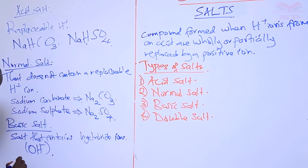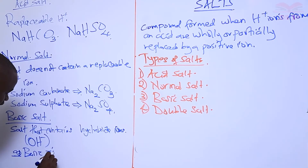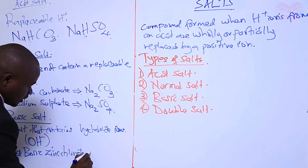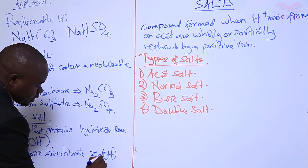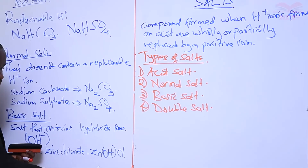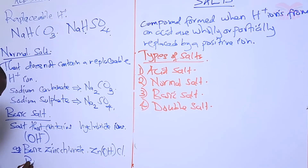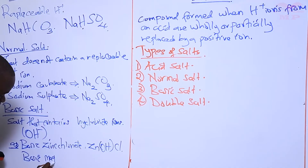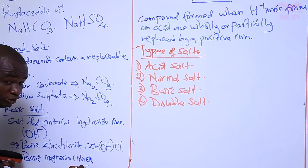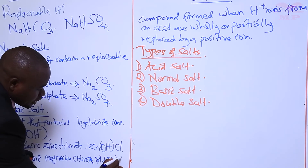For example, we have basic zinc chloride. The formula is Zn(OH)Cl. This salt is called a basic salt because of the presence of hydroxide ions. Another example is basic magnesium chloride, with formula Mg(OH)Cl.